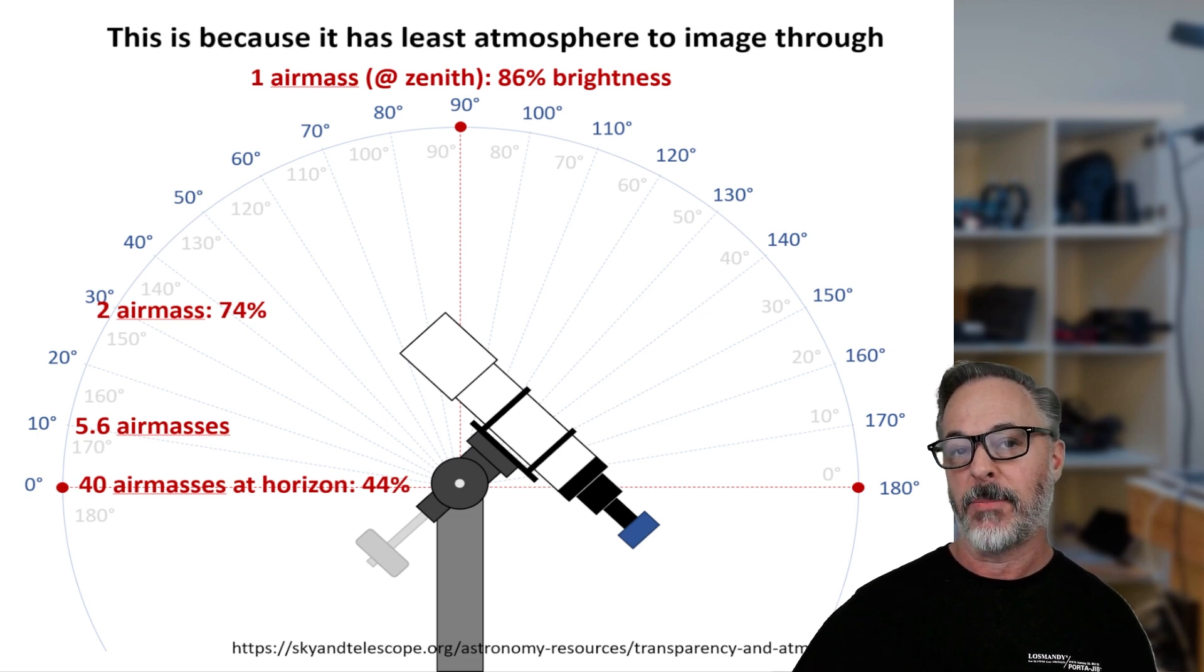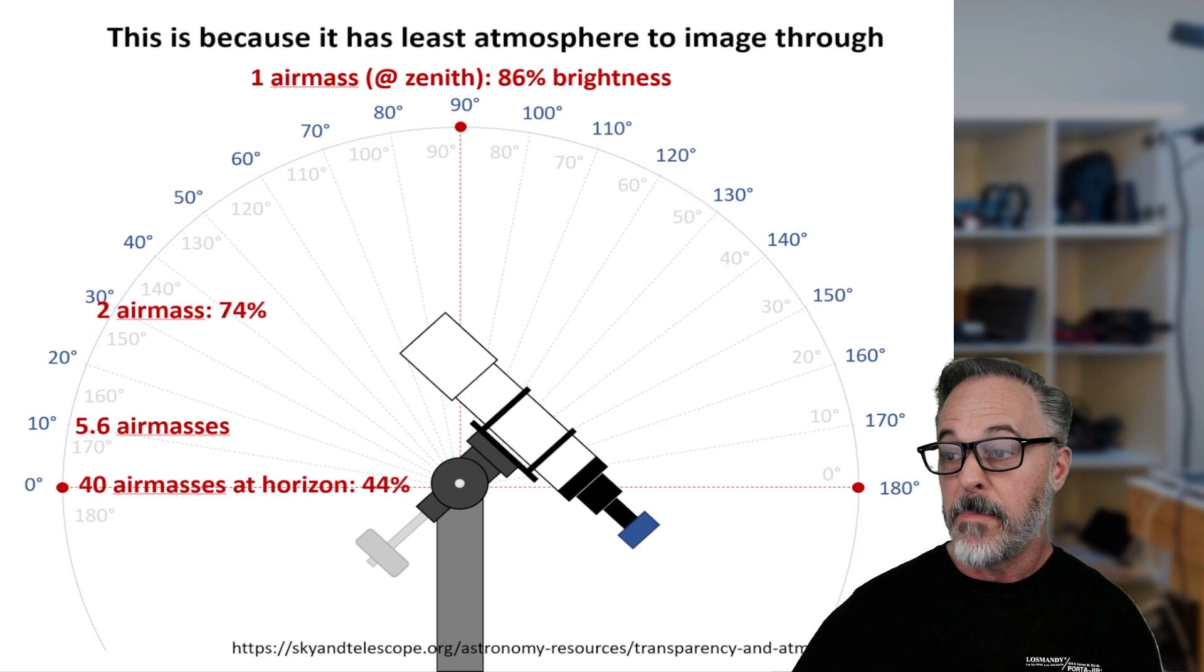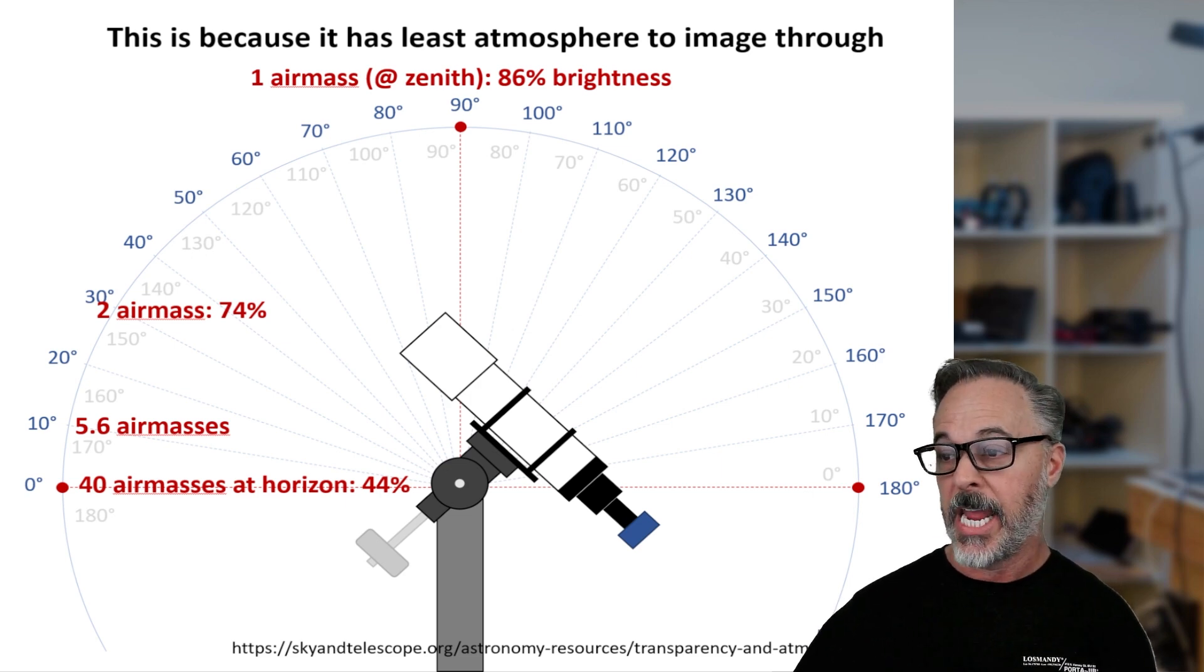This is because when you look at transparency and a related concept called extinction, directly above you at the Meridian is where it has the least amount of atmosphere to image through. And the least amount of atmosphere means your targets are going to be the brightest and the least susceptible to atmospheric conditions.